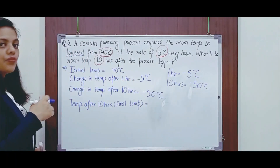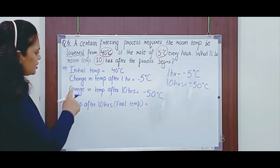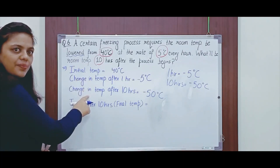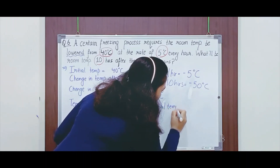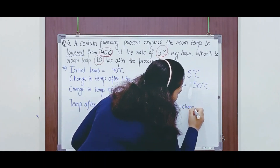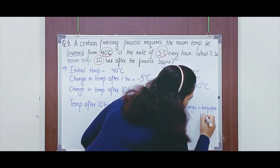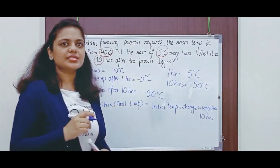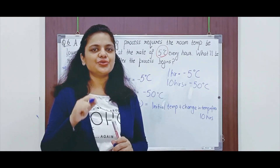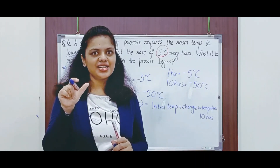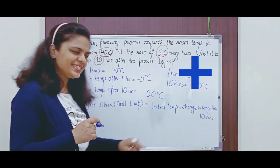Since it is asking what will be the room temperature 10 hours after the process begins, the final temperature equals the initial temperature plus the change in temperature after 10 hours. For example, if you have 10 chocolates initially and 3 more are gifted to you, the total is 10 plus 3 — that is initial plus the change. Similarly, the final temperature equals the initial temperature plus the change in temperature.